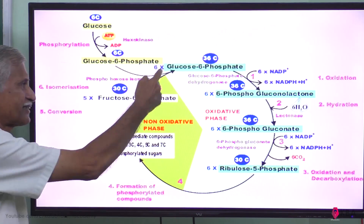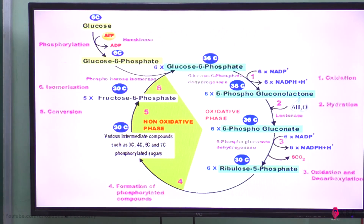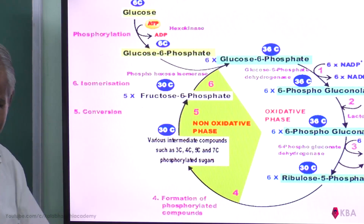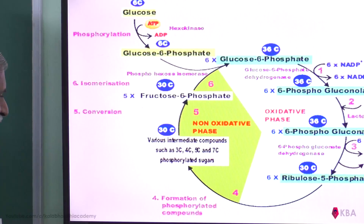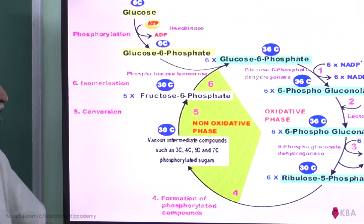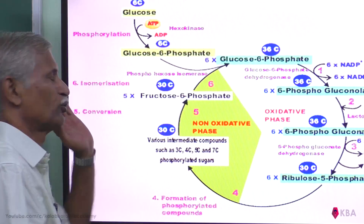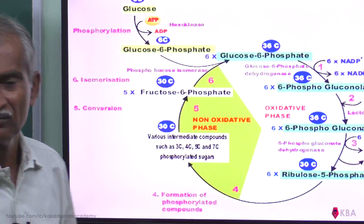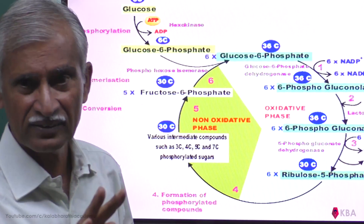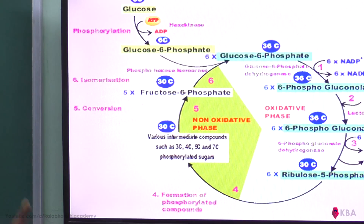In the non-oxidative phase, formation of various phosphorylated compounds takes place — 3C, 4C, 5C, and 7C intermediates are formed. These intermediates are used for DNA production, RNA production, fat production, and amino acid production. It is primarily an anabolic pathway.